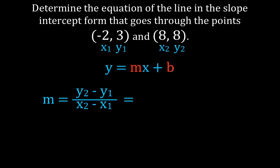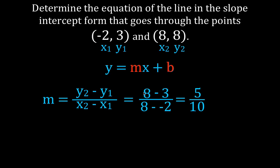We have y2 is 8 and y1 is 3, so it's 8 minus 3. Now x2 is 8, and be very careful here — x1 is minus 2, so it's x2 minus x1, meaning 8 minus (minus 2), which is a plus. That gives us 8 minus 3 equals 5, and 8 minus (minus 2) equals 10. So 5 over 10 means the slope is 1/2.